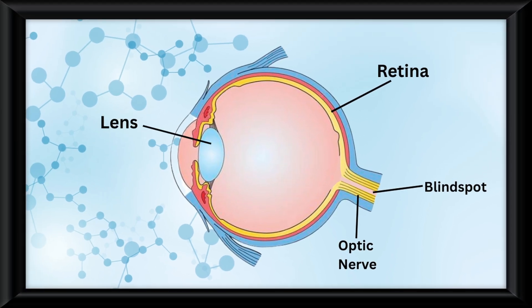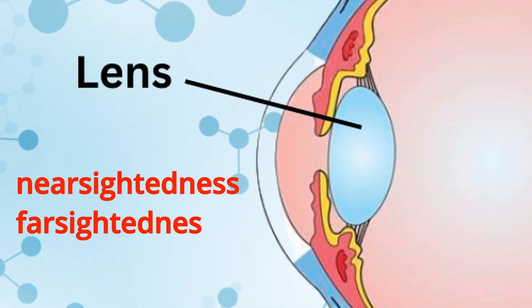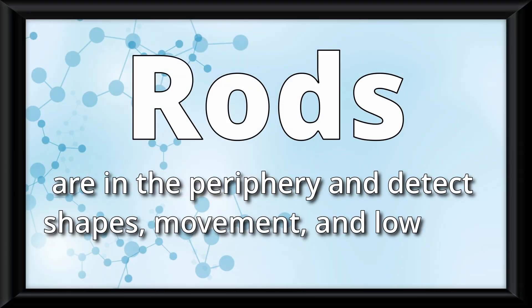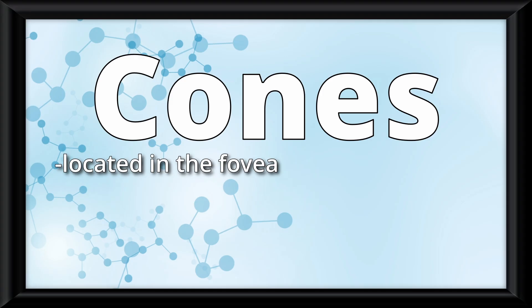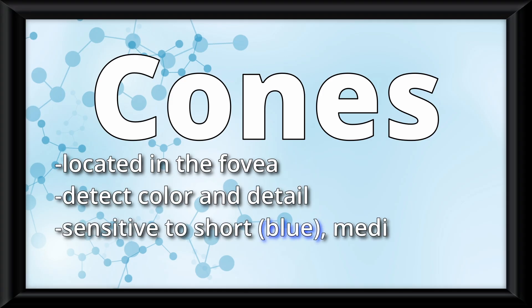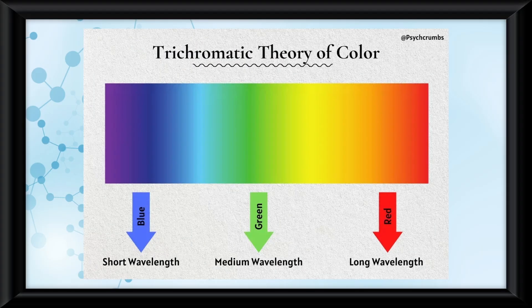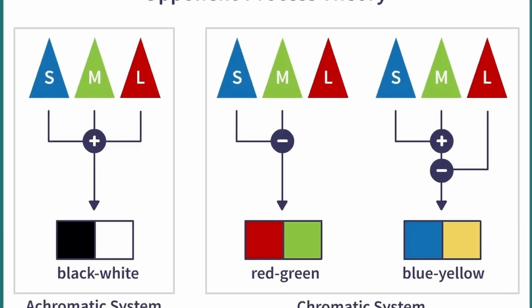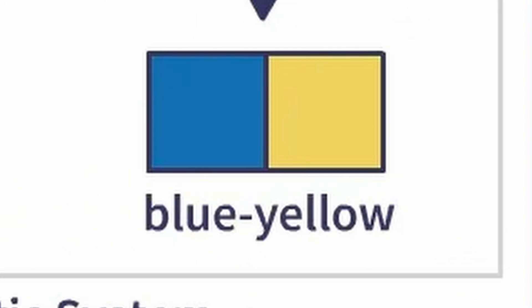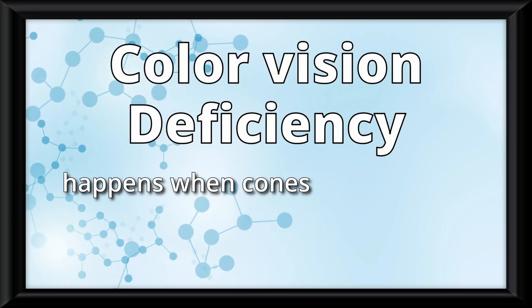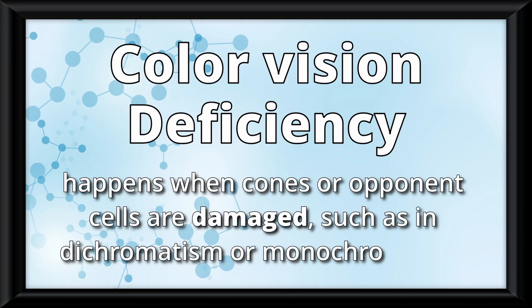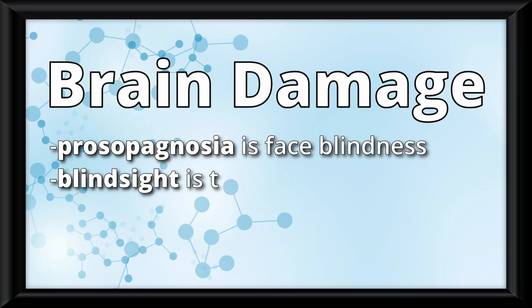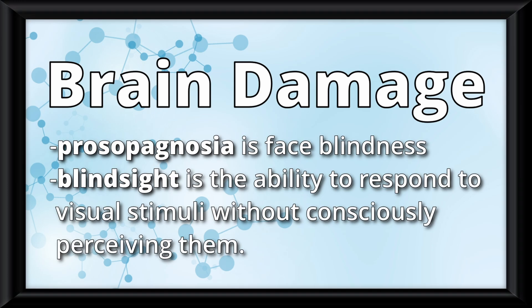The lens focuses light through accommodation, and errors here cause nearsightedness or farsightedness. The retina contains two types of photoreceptors: rods, in the periphery, detect shapes, movement, and low light; and cones, located in the fovea, detect color and detail. Cones are sensitive to short, medium, and long wavelengths. The trichromatic theory explains color detection through these cones, while the opponent process theory explains afterimages and color vision through paired processes such as red-green, blue-yellow, or black-white. Color vision deficiency happens when cones or opponent cells are damaged, such as in dichromatism or monochromatism. Brain damage can also disrupt vision: prosopagnosia is face blindness, and blindsight is the ability to respond to visual stimuli without consciously perceiving them.